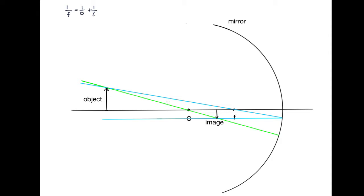I've drawn a couple of rays coming from the object. The first one is going through the focal point, and we know that when a ray goes from an object through the focal point, then it's reflected parallel to the principal axis. So this blue line here is parallel to the principal axis.